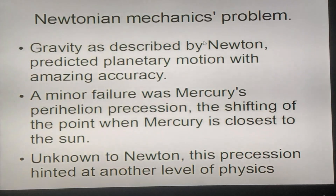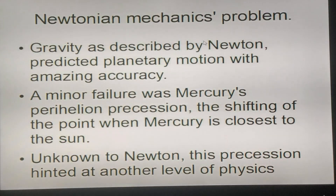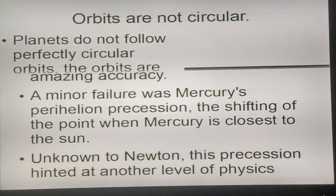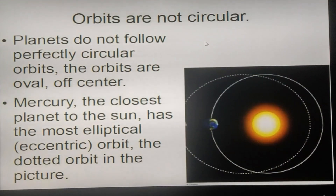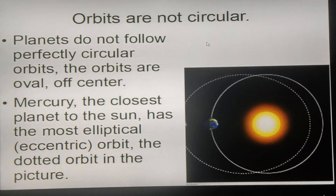Gravity as described by Newton predicted planetary motion with amazing accuracy. The only minor failure was Mercury's perihelion precession — the shifting of the point where Mercury is closest to the Sun. This precession hinted at another level of physics. Planets do not follow perfectly circular orbits. Their orbits are oval, squashed, slightly off-center. Mercury, the closest planet to the Sun, has the most elliptical or eccentric orbit, shown as the dotted line here.